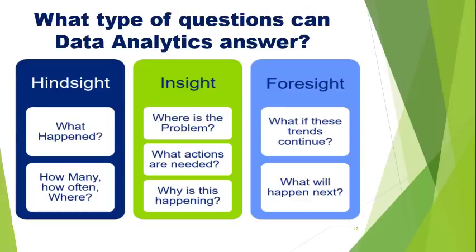When the data is related to the past, we can analyze it to check what has happened, how many times did it happen, how often did it happen, where did it happen — and that's what we call hindsight. We can also get insights with current data to understand where the problem is, perform a root cause analysis, decide what action is to be taken, and analyze why it is happening. We can also use data of the past and present to predict the future — this is where foresight comes into the picture. Looking at how the business has performed in terms of sales, purchases, or expenses, we can predict what will happen if these trends continue.